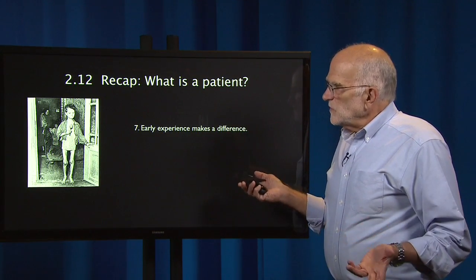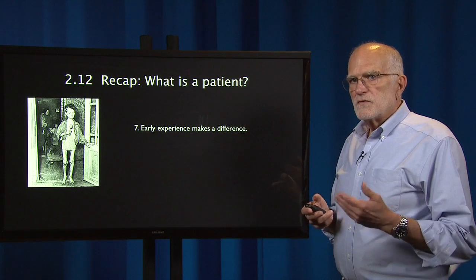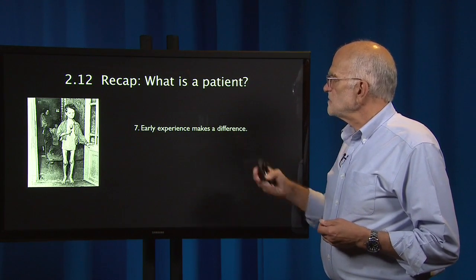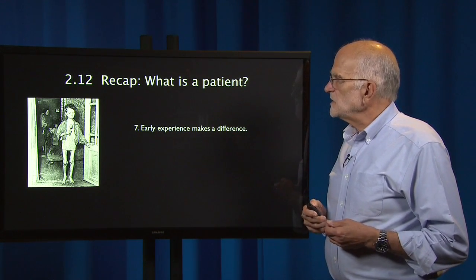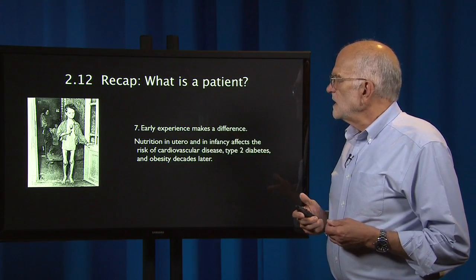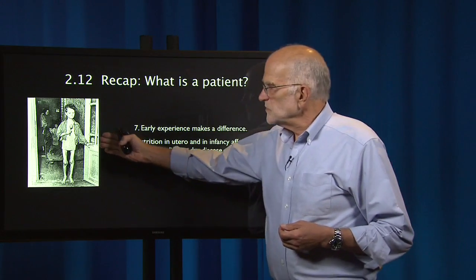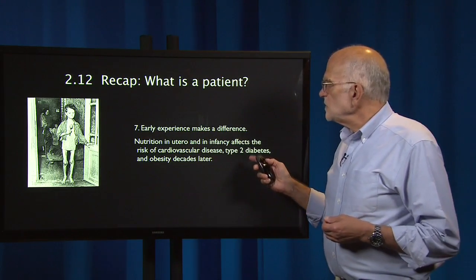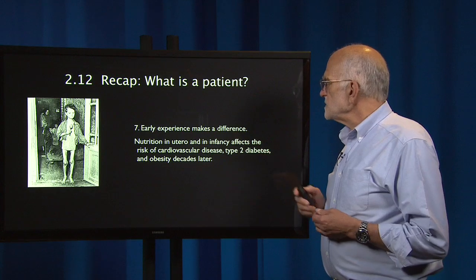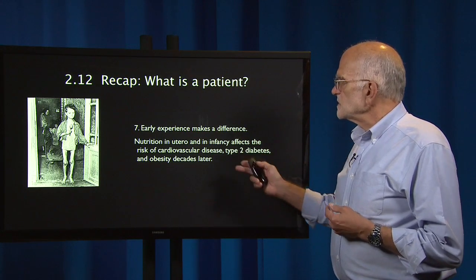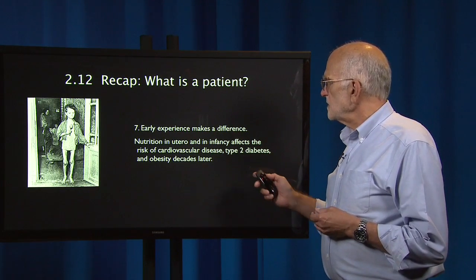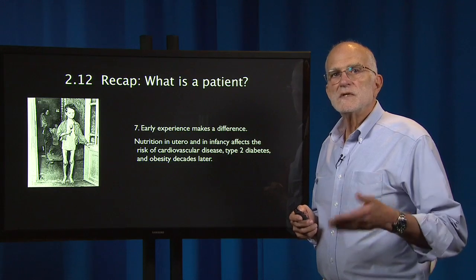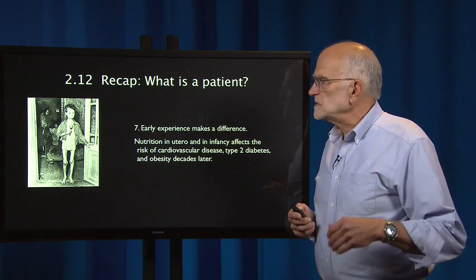Another very interesting developing part of our vision of what is a patient is that early experience makes quite a difference, and we evoke that with this picture from the Dutch Hunger Winter. Nutrition in utero and in infancy affects the risk of cardiovascular disease, type 2 diabetes, and obesity decades later, as well as some other diseases.